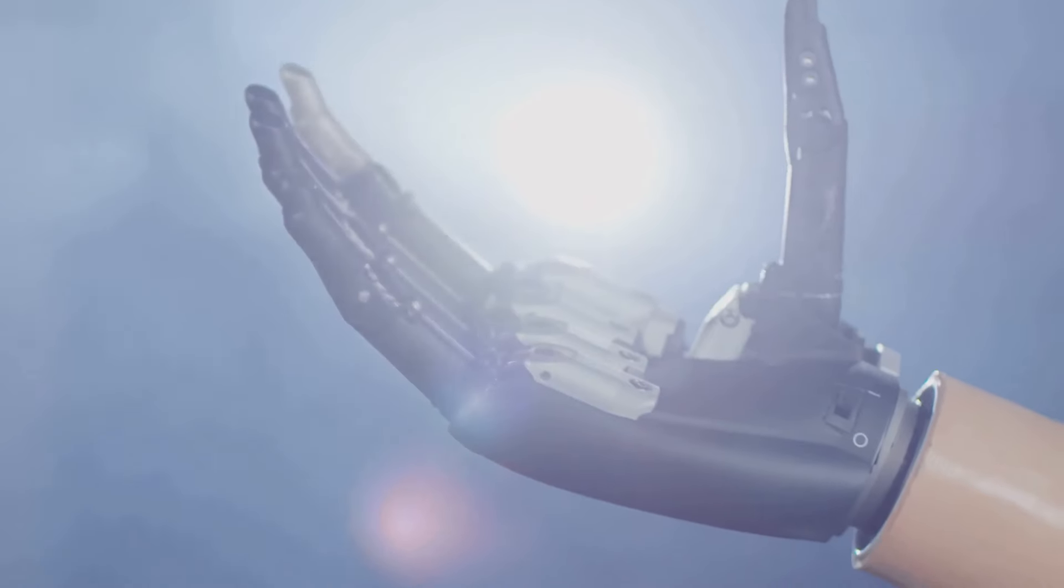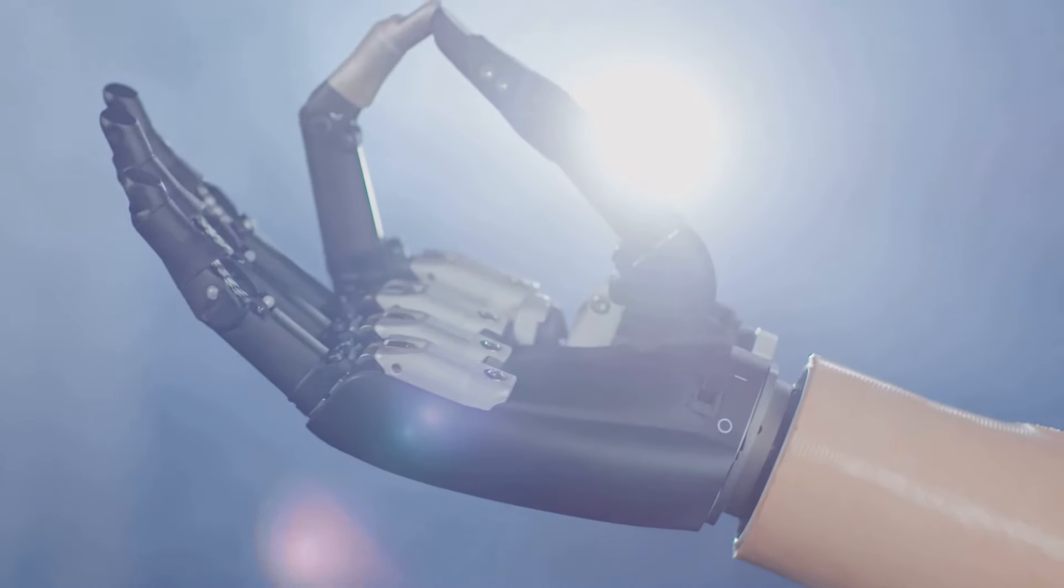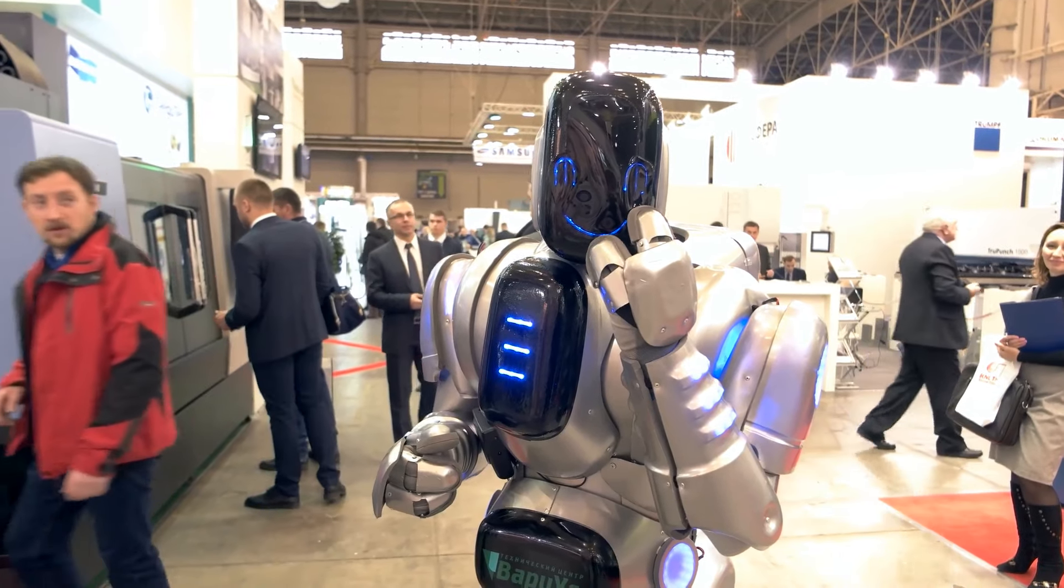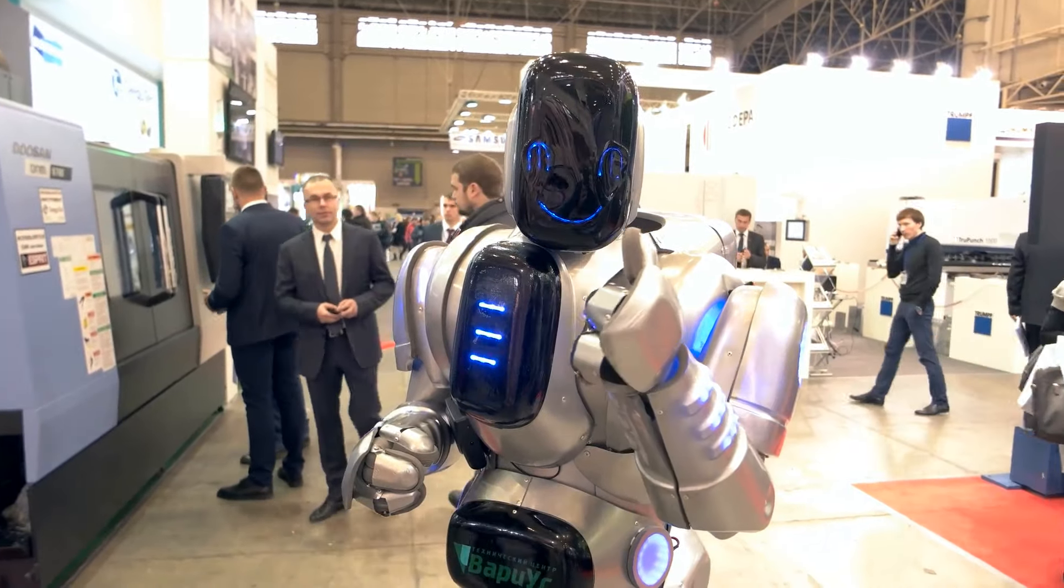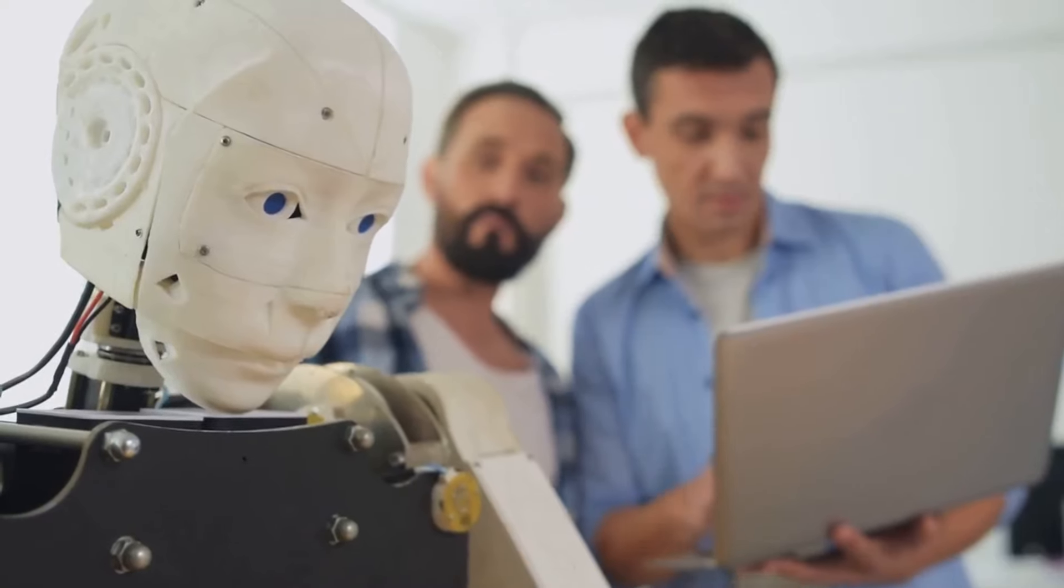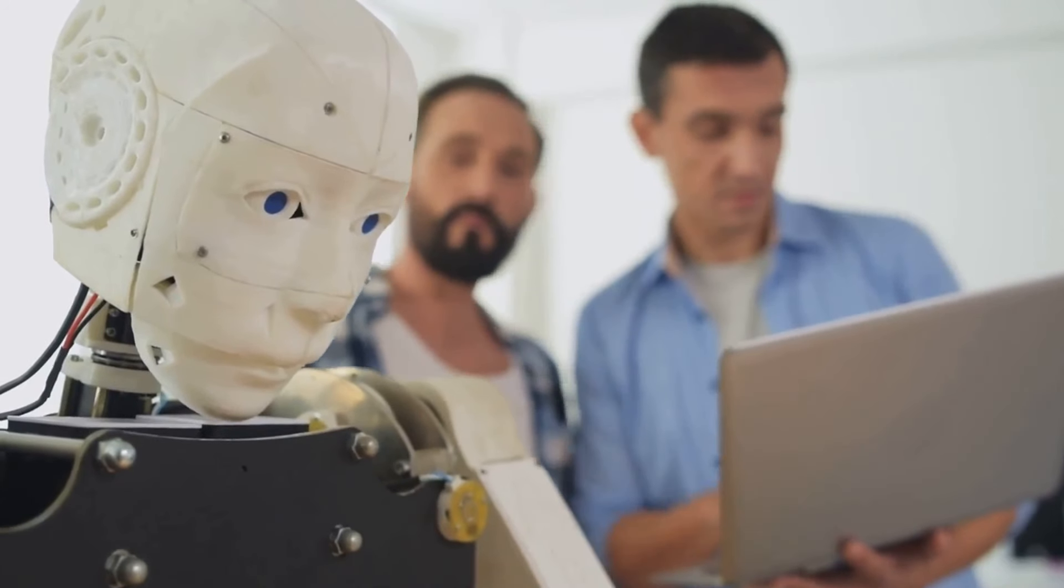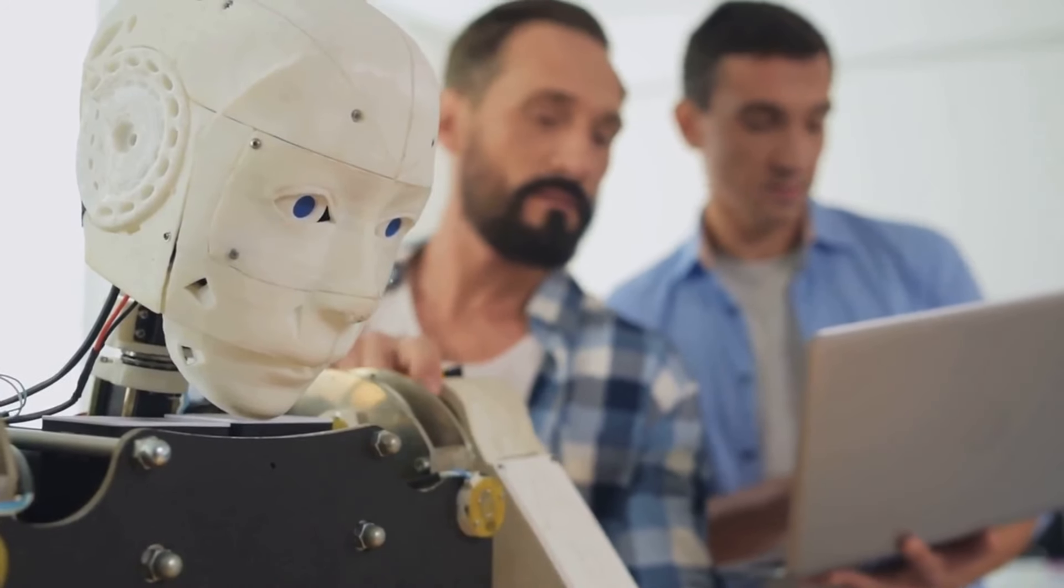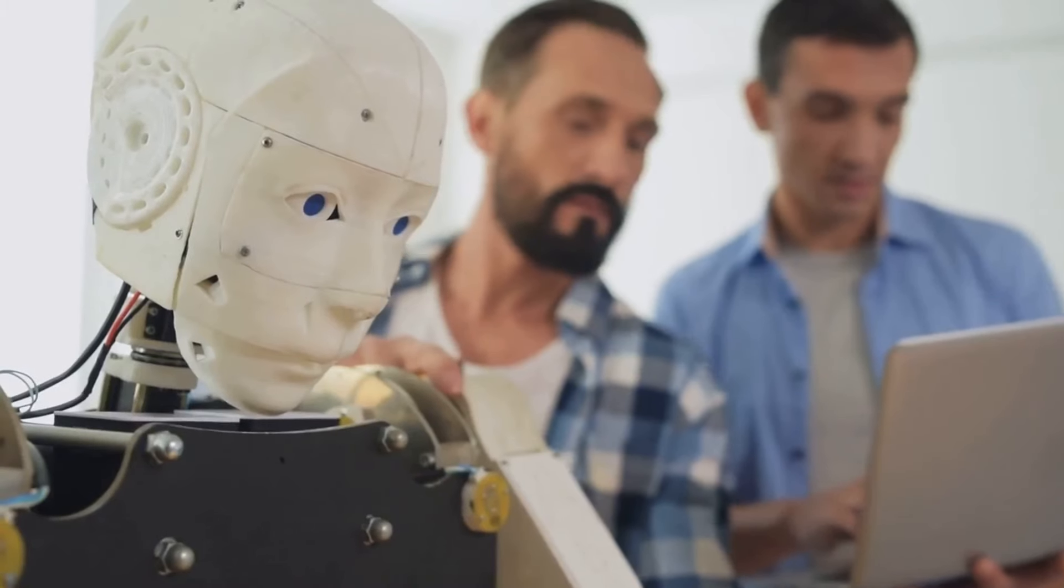The unveiling of John marks a significant milestone in the journey towards AGI and the integration of intelligent machines into our world. This AGI-ready humanoid robot is not just a testament to human ingenuity, but also a harbinger of a future where humans and machines collaborate to solve complex problems and push the boundaries of what's possible.